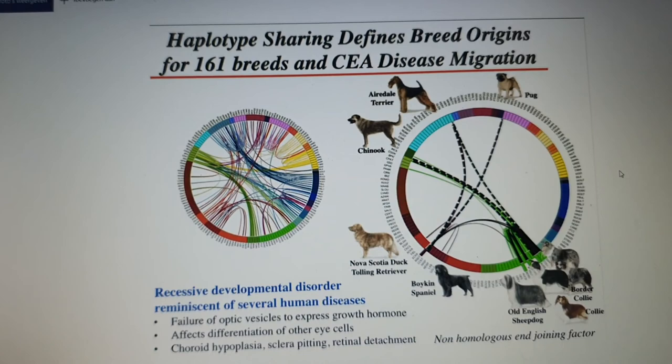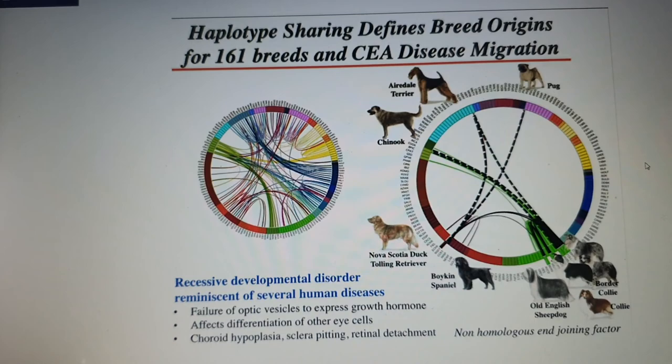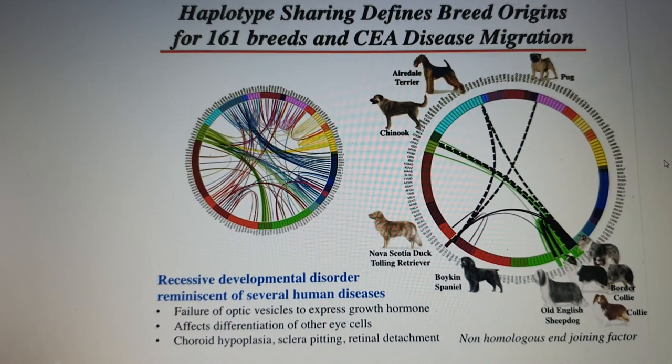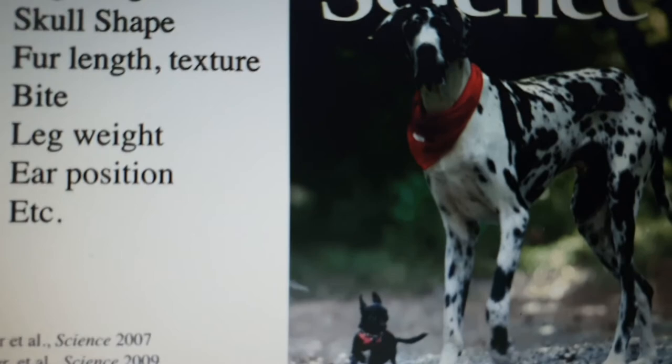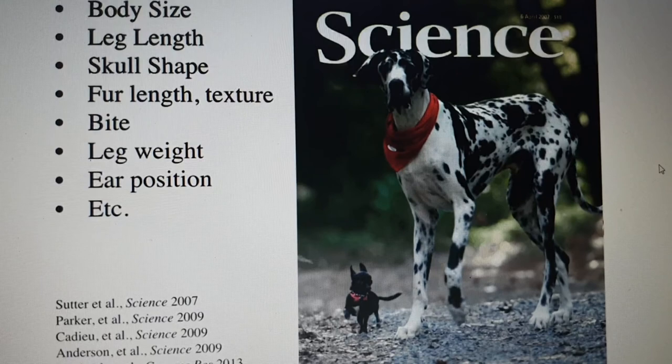Even a lap dog like the Pekingese has this CEA fault — and some Terriers were affected too. The affected Terrier carries hound blood, which connects to the Airedale Terrier: in my opinion it is not a true Terrier. A terrier implies the dog can go to ground — 'terrier' derives from 'terra,' meaning earth — but the Airedale is an Otterhound cross, making it more of a hound than a terrier in character.